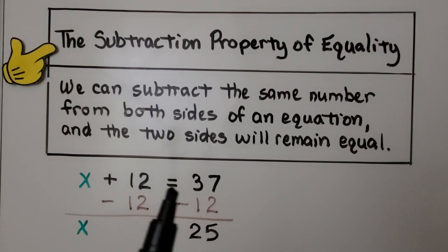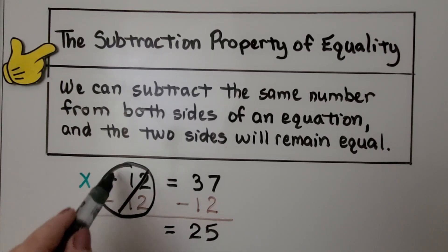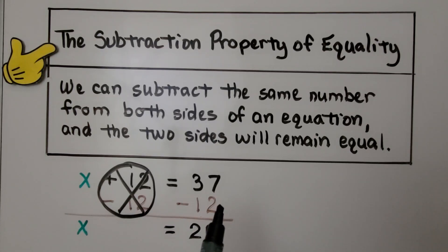We have x plus 12 is equal to 37. We can take 12 away from both sides of the equal sign, and that will eliminate it, remove it. And when we take 12 away from the 37, we get 25. We know that x is equal to 25.